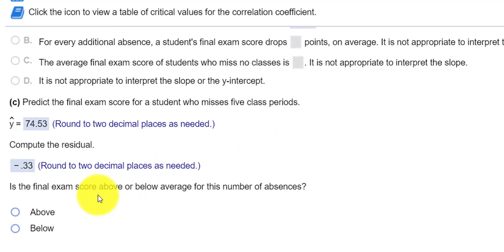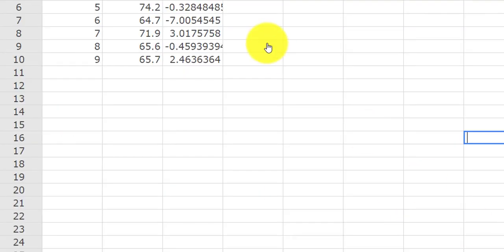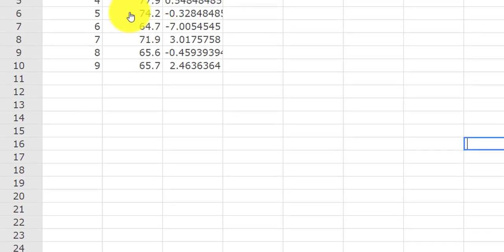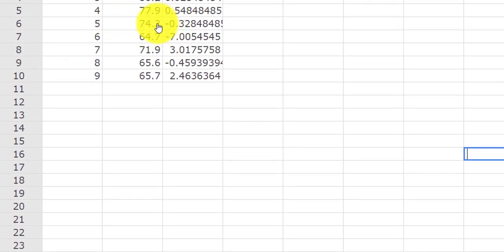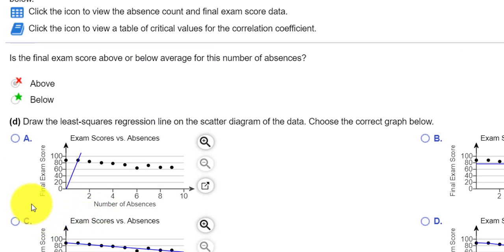And it says, is the final exam score above or below? So we're going to say below. The negative residual tells us that we're below the average. And we can look at our scores in StatCrunch. So we have 74.2. That is below what we see here, below the 74.53, below by 0.33.